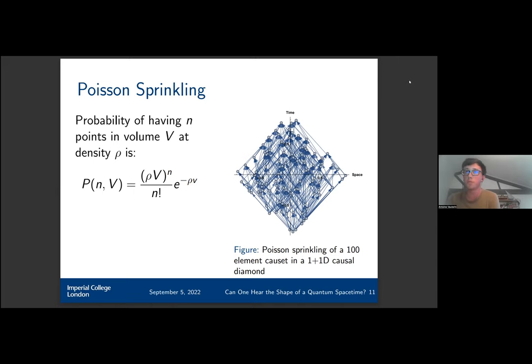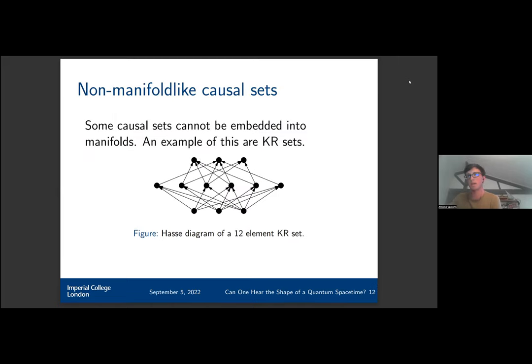Then we can just use the metric of the spacetime to link the events. However, not all causal sets can be embedded into a manifold. There are so-called non-manifold-like causal sets. Here we have an example which is a KR set, which is non-manifold-like because it only has three layers in time.